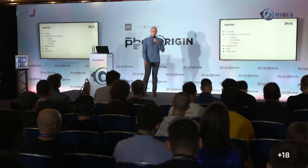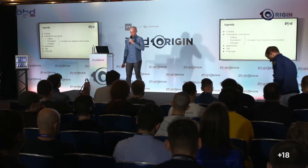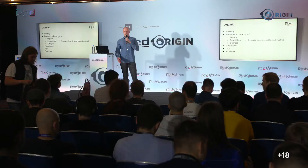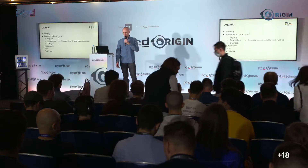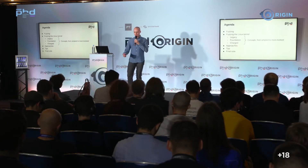Today I'll talk about fuzzing in general first, for those who don't know what it is, and then move to the kernel discussion. My presentation splits into three sections about different ideas needed to fuzz the kernel, split by complexity and evolution. Then I'll present the ideas, tell you what approaches are available if you want to start fuzzing the kernel tomorrow, and finally some tips and tricks.